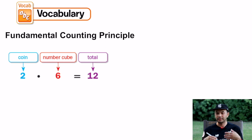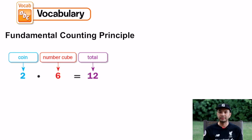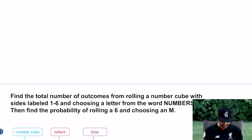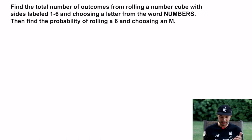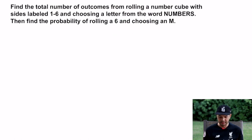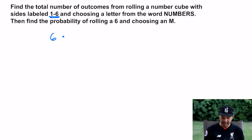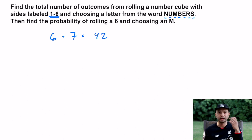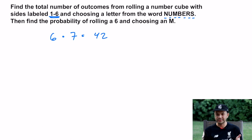You can actually make a table — it'd be H1, H2, H3, H4, H5, H6, then T1, T2, T3, T4, T5, T6 — and you get 12, no other combinations. So let's try an example: find the total number of outcomes from rolling a number cube with sides labeled one through six and choosing a letter from the word NUMBERS. That's 6 times 7 letters, which gives you 42 — way faster than making a table.